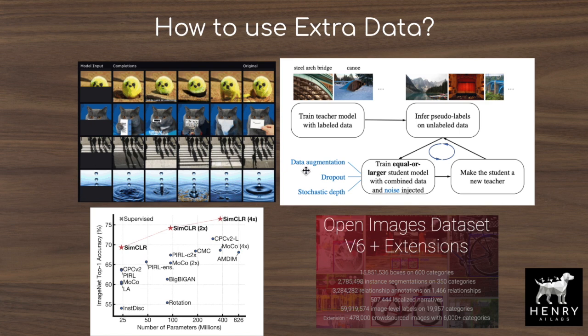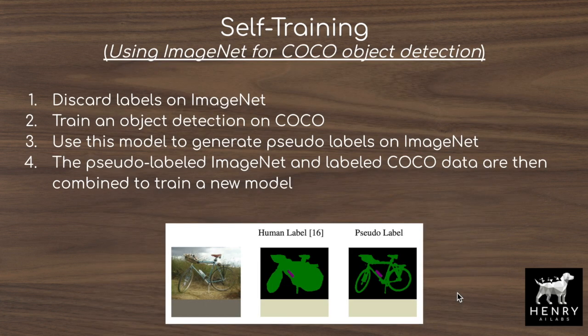The third technique — shown to be very effective in this paper — is self-training. Self-training was made popular with the Noisy Student paper that achieves the ImageNet classification state-of-the-art. It uses the unlabeled data alongside the smaller set of labeled data simultaneously throughout training to improve upon the signal in the labeled data by leveraging extra unlabeled data. This is demonstrated using the ImageNet dataset to help train an object detection model on the COCO labeled dataset.